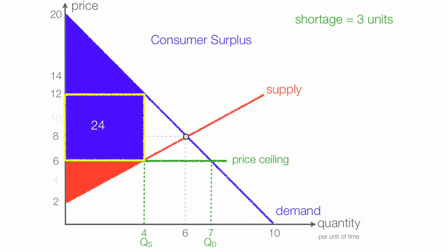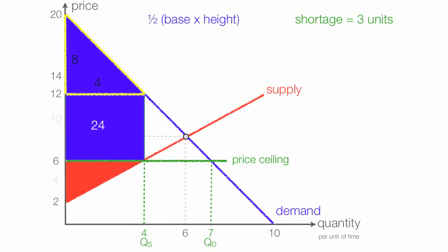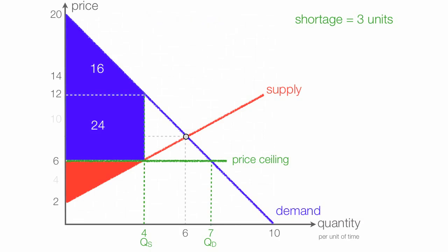The area of the triangle has a base of 4 and a height of 8, since 20 minus 12 is 8. So it becomes one half base times height, which is one half times 4 times 8, or one half times 32, which equals 16. So the area of the triangle is 16. Consumer surplus is 16 plus 24, which adds up to 40. So consumer surplus is 40.